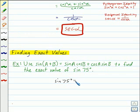So our first step is to rewrite 75 degrees as 45 degrees plus 30 degrees. Now we're going to use this angle sum identity.